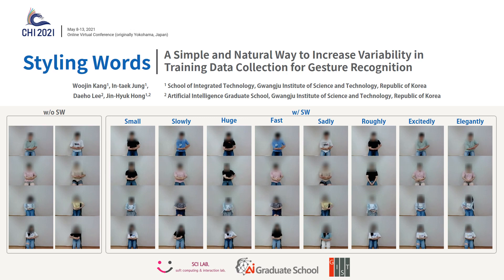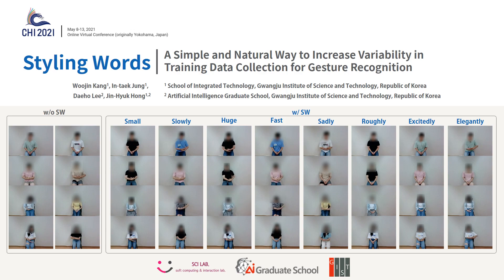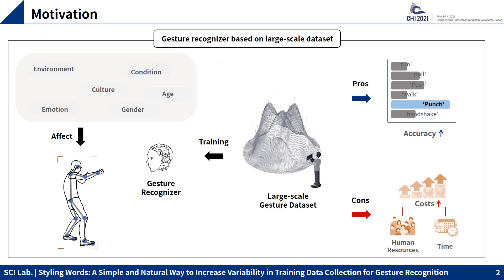We propose a simple and natural data collection method called styling words to improve gesture recognition performance. Gestures have become a common tool for human-computer interaction because of their intuitiveness and usefulness. But human gestures are easily affected by various factors such as affective or physical body conditions, so gesture recognition still remains one of the most challenging problems in computer vision.